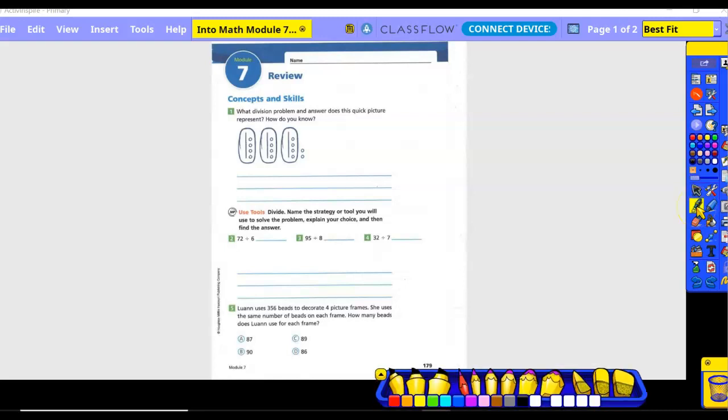Chapter seven or module seven, two or three into math. Concepts and skills. What division problem and answer does this quick picture represent? How do you know? So basically we need to add our place sizes, correct?